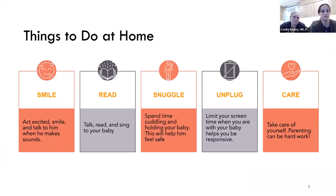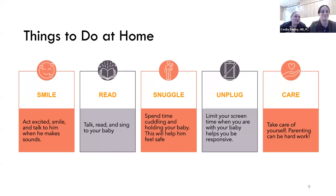Some things to do at home before your first visit: smile at your baby and act excited — it sounds silly, but you're modeling behavior. Their first motor and language behavior will be a social smile back at you. Even if you're exhausted and overwhelmed, smiling to your baby is perfection. Also, start reading to your baby every night — even if they're not paying attention to the book, it's a wonderful practice to establish from birth.